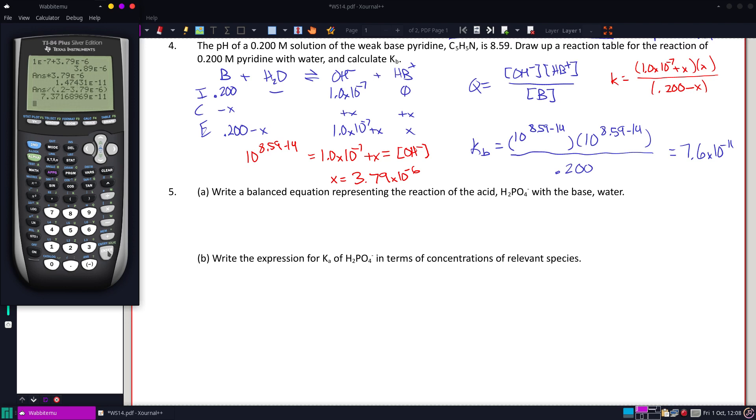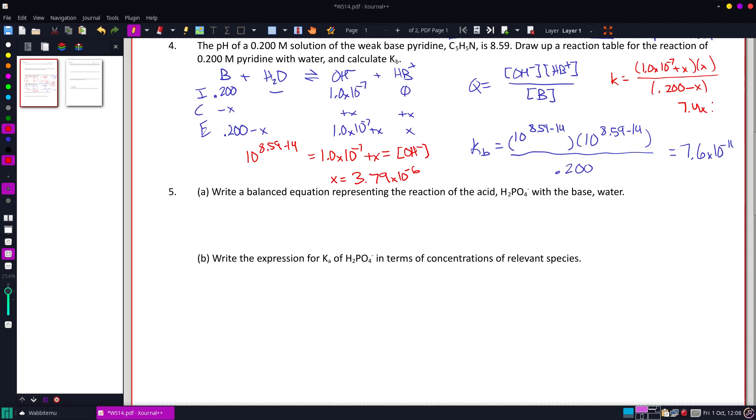And if you notice, the Ka is roughly the same thing: 7.4 times 10 to the negative 11th. So we'll make ever so slight changes if you do it the more long, drawn-out way, but we're well within the error and it's safe to make these assumptions.